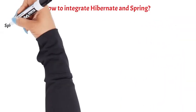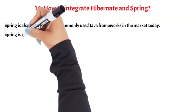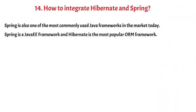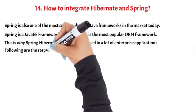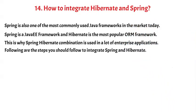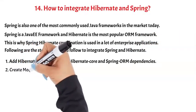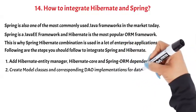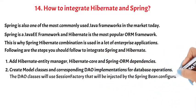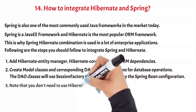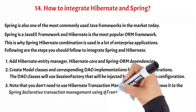Question 14: How to integrate Hibernate and Spring? Spring is one of the most commonly used Java frameworks today, and Hibernate is the most popular ORM framework. The Spring-Hibernate combination is used in many enterprise applications. Steps to integrate: 1) Add Hibernate Entity Manager, Hibernate Core, and Spring ORM dependencies. 2) Create model classes and corresponding DAO implementations for database operations — the DAO classes will use SessionFactory injected by the Spring Bean configuration. 3) You don't need to use Hibernate transaction management; you can leave it to Spring declarative transaction management using the @Transactional annotation.